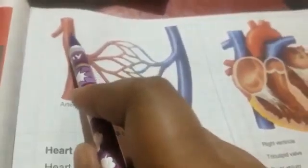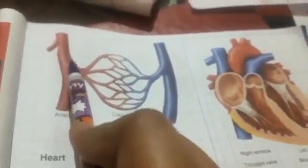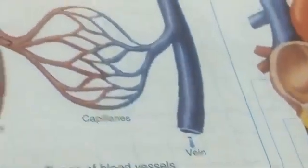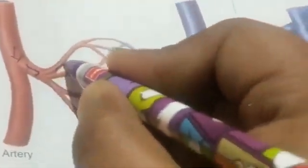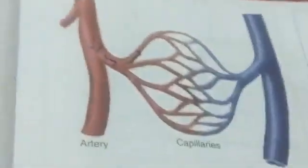Oxygenated blood from the arteries carries nutrients and oxygen. This passes through the arterioles. From the arterioles, the blood carrying oxygen and nutrients passes through to fine capillaries, which go through the tissues.